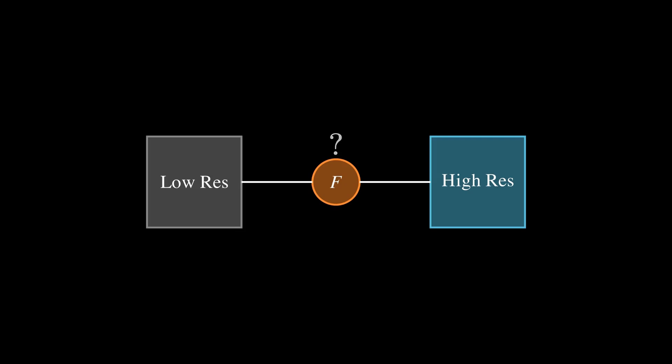With a better understanding of the problem, we can now turn our attention to the main question remaining. How do we create a function F to map from low-to-high-resolution images? And it turns out, like most problems in computer vision, it's machine learning, specifically convolutional neural networks, to the rescue.